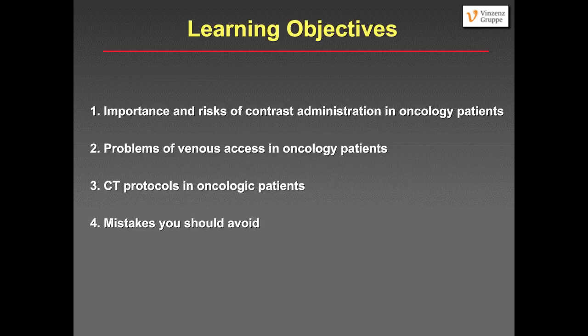What are the learning objectives? There are four key points I would like to present. First, the importance and risks of contrast administration in oncologic patients. Second, the real clinical problem we face with venous access in cancer patients who have had repeated injections. Then I'll present CT protocols in various oncologic entities of the abdomen: liver cancer, pancreatic cancer, esophageal and gastric cancer, and colorectal cancer. And then I'll show some mistakes to avoid.